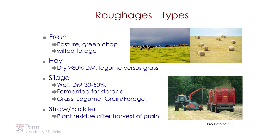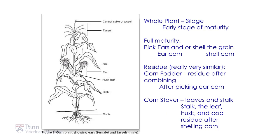And then we have straw and fodder. After we pick the grain and use that for human use, the plant residue like straw or the fodder that remains can become an animal feed. We have the whole plant and we can cut that into silage at an early stage of maturity. At full maturity, we'll pick the ears and shell the grain, and we can have shell corn or grind up the whole ear of corn for ear corn. The residue then becomes corn fodder — the residue after combining to get the ears — or corn stover, which includes the leaves, stalk, leaf, husk, and all material after getting the shell corn.